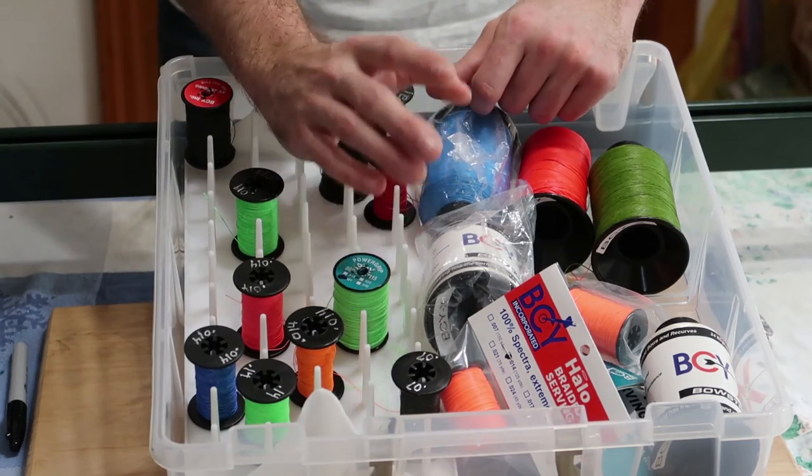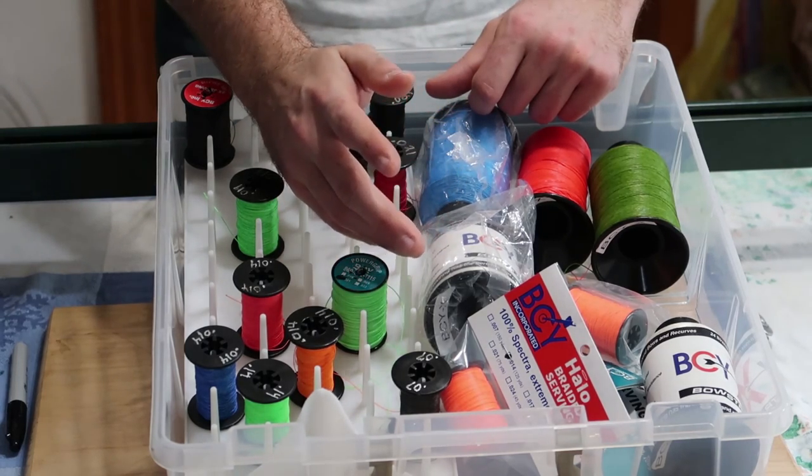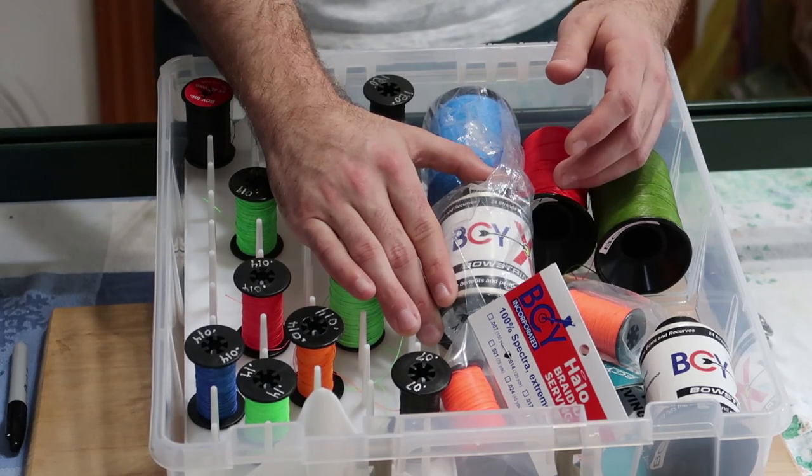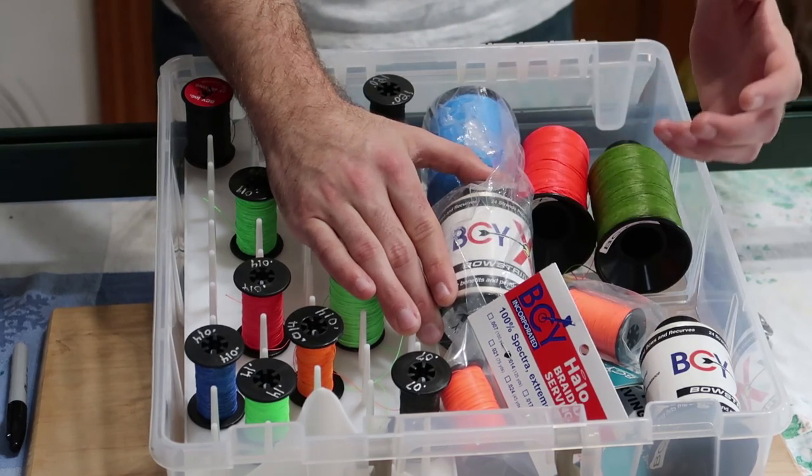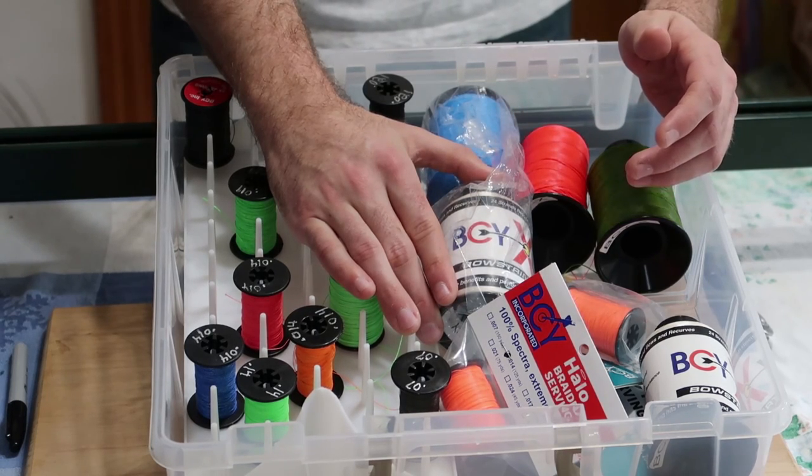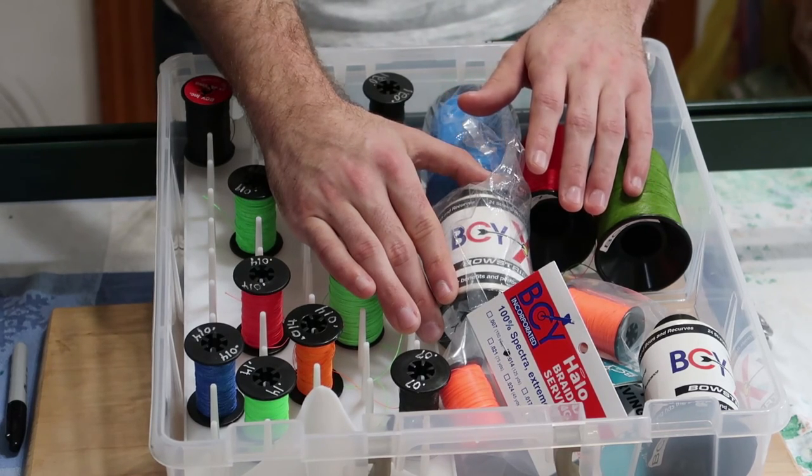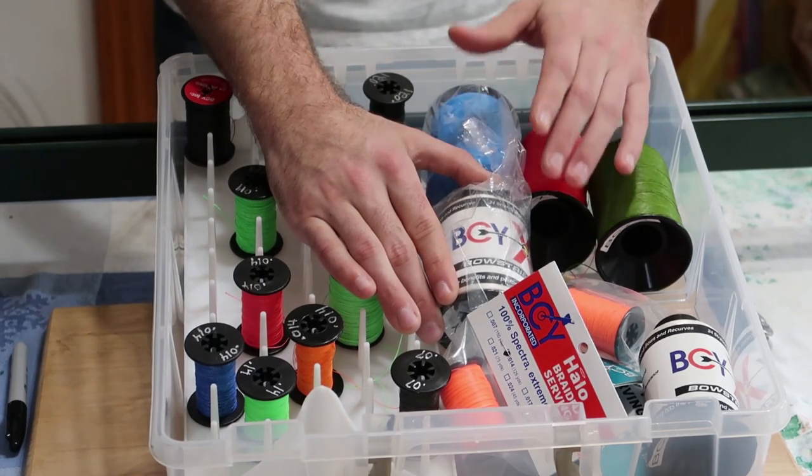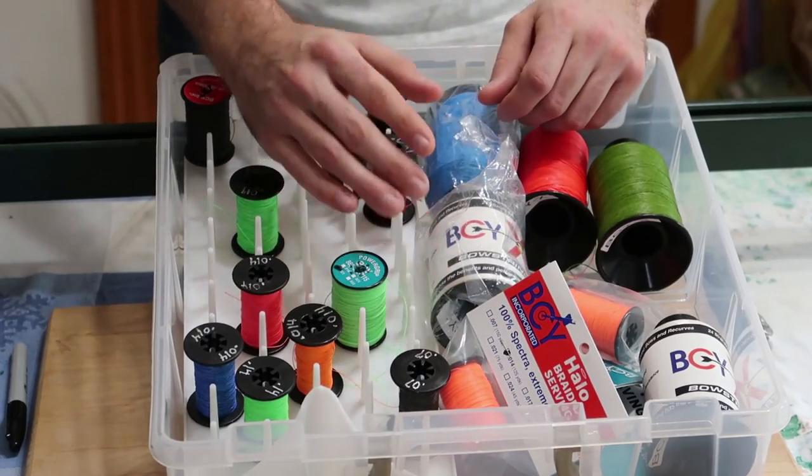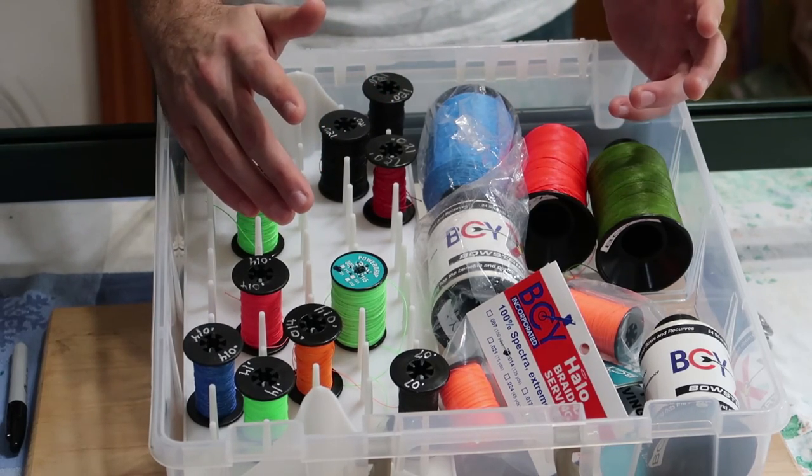BCY also makes a ton of different types of bowstring. There will be other types that may work better with your compound bow or be more designed for your traditional bow. You will have to do some research. As an Olympic recurve shooter, I find BCYX to be the best type of bowstring. Now that we have that squared away, we're going to pick what color we want.